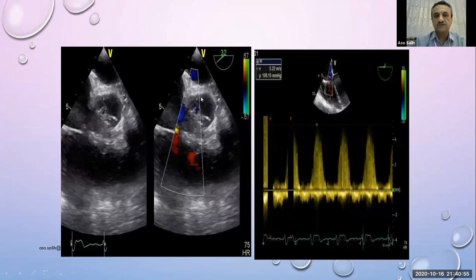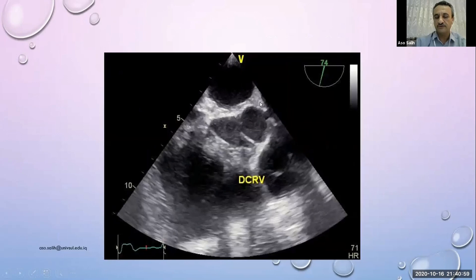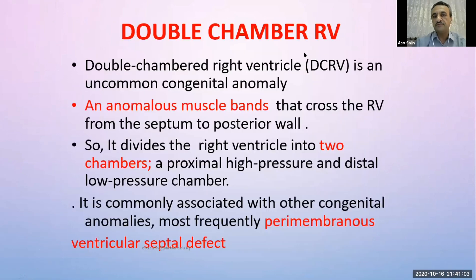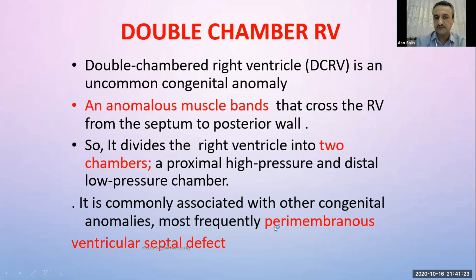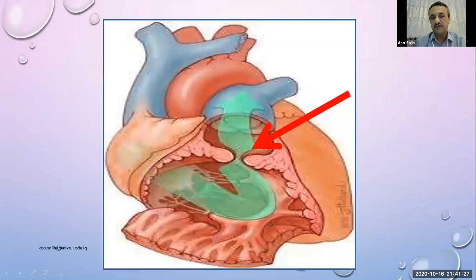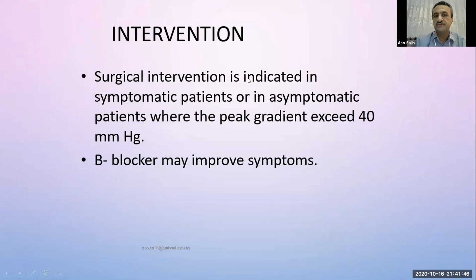Echo showed a muscular ridge below the pulmonary valve, making the right ventricle double-chambered. Double-chambered RV is an uncommon congenital anomaly with an anomalous muscle band crossing the RV from the septum to the posterior wall, dividing it into two chambers. It is commonly associated with other congenital defects, most frequently VSD. When the VSD tries to heal itself, it can cause muscle formation below the valve. Surgical intervention is required as it cannot resolve by itself.